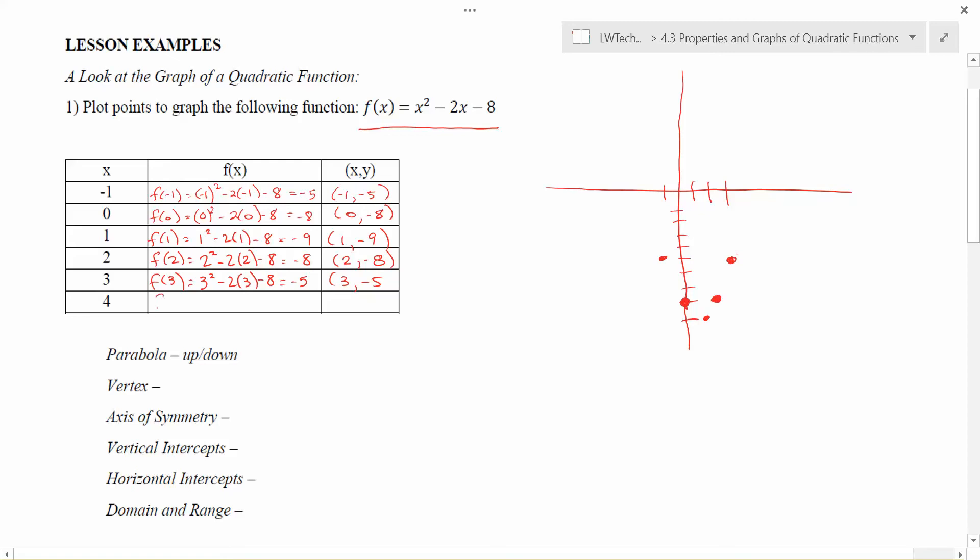I'll wrap up here by picking 4 as an input. So here I get 4² minus 2 times 4 minus 8. We get 16 minus 8 is 8, and then minus 8 again gives me 0. And I have the point (4, 0) as another point on my graph.